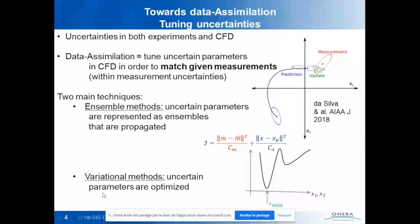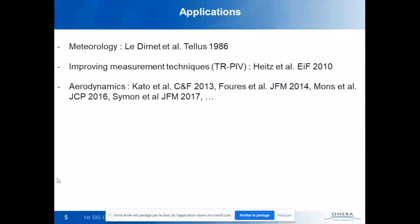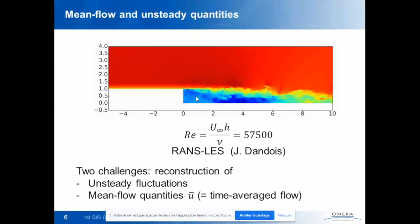I'll focus on variational methods. Historically, data assimilation came from meteorology and was introduced into aerodynamics and measurements around 2010, for example to improve PIV measurements. In aerodynamics, key contributions came from Kato and later others such as Vincent Mons and Sean Symon, with whom I collaborated.